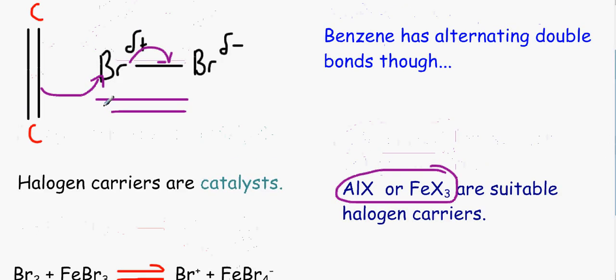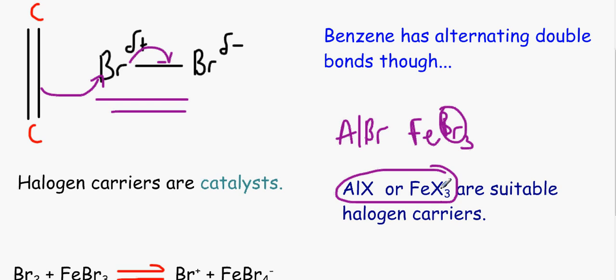And we've got two very good halogen carriers here. We've got aluminium whatever you want to substitute it with, and iron 3 plus whatever we want to fill it with. So say for example if we want to split up bromine we would use AlBr3 or if you want you can use FeBr3.